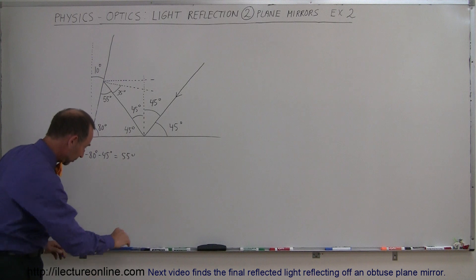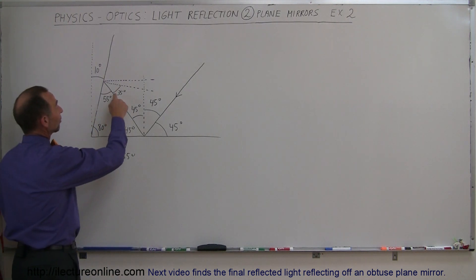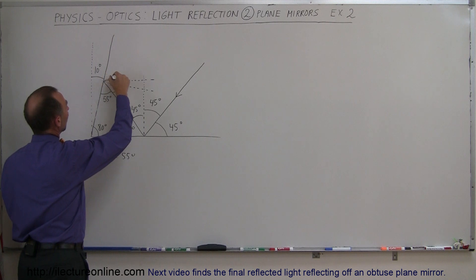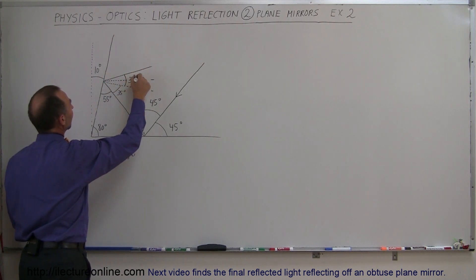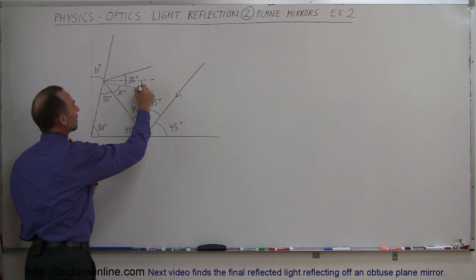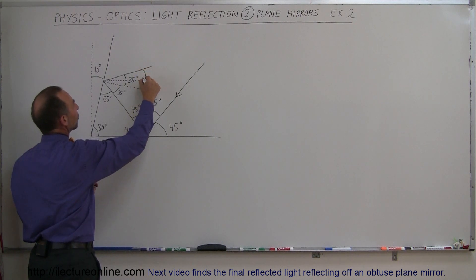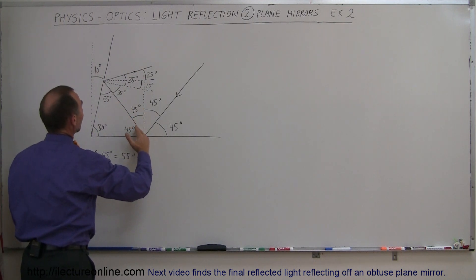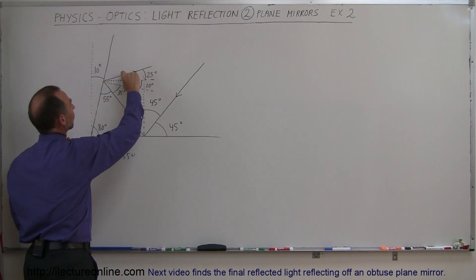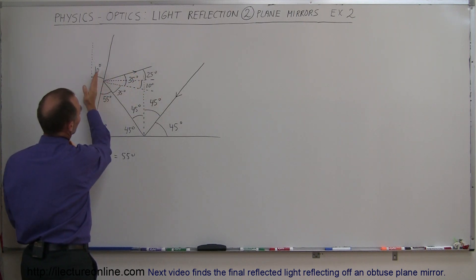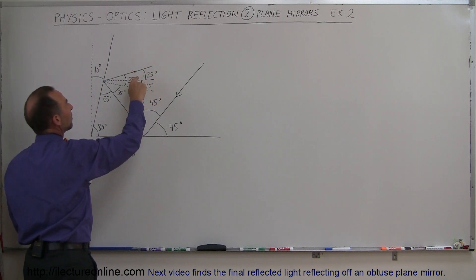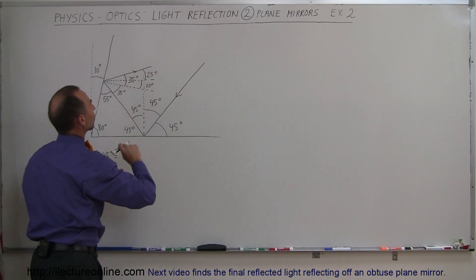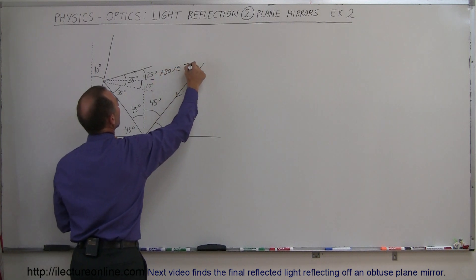Now that we know the angle of incidence is 35 degrees, we can figure out the angle of reflection. The angle of reflection must also be 35 degrees according to this normal. Since the angle between the normal and the horizontal is 10 degrees, that makes the reflected beam 25 degrees above the horizontal. So the final direction of the exiting beam is 35 degrees minus 10 degrees, which is 25 degrees above the horizontal.